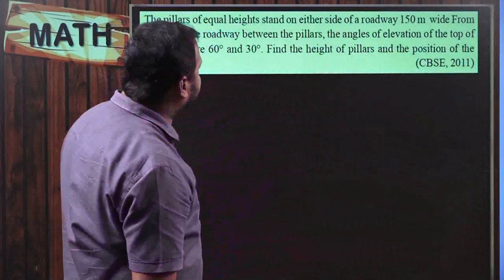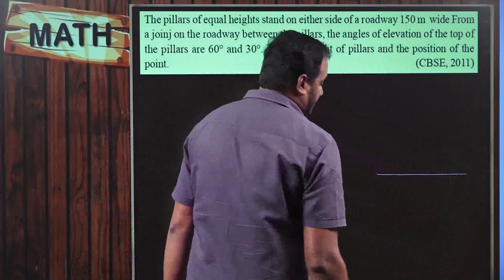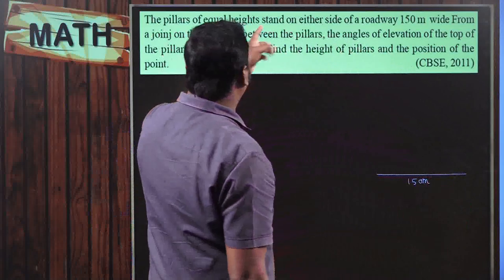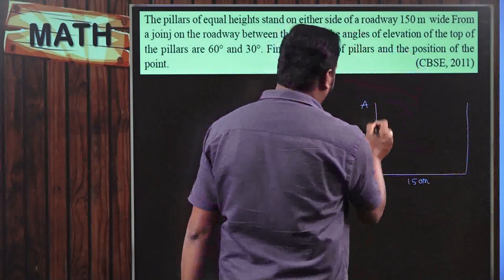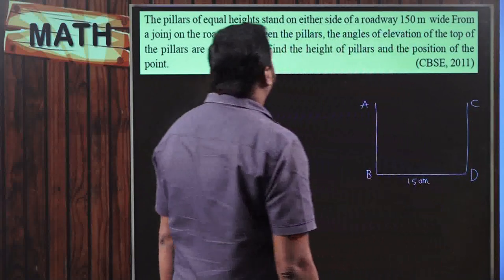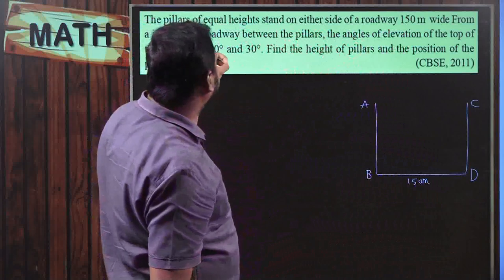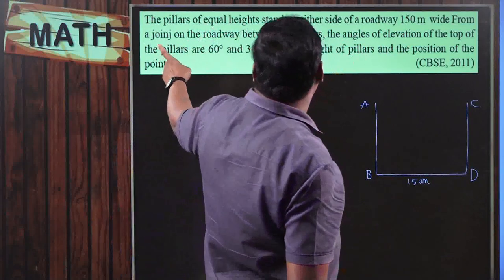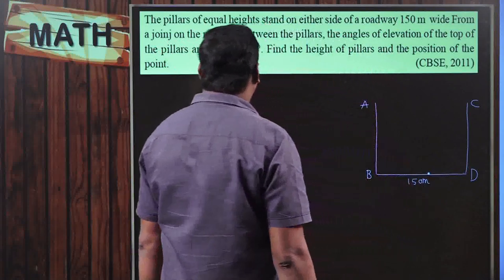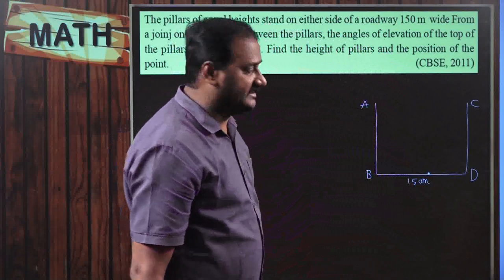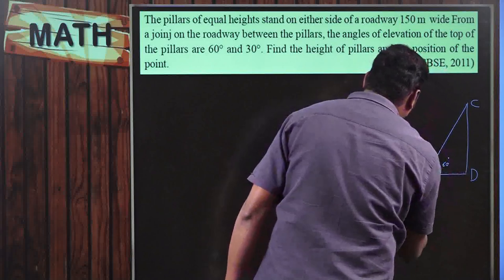Two pillars of equal height stand on each side of a roadway 150 meters wide. This is the road, whose width is 150 meters. The two pillars of equal heights — let the first pillar be AB and the second pillar be CD. From a point on the roadway between the pillars, the angles of elevation of the tops of the pillars are 60 degrees and 30 degrees.